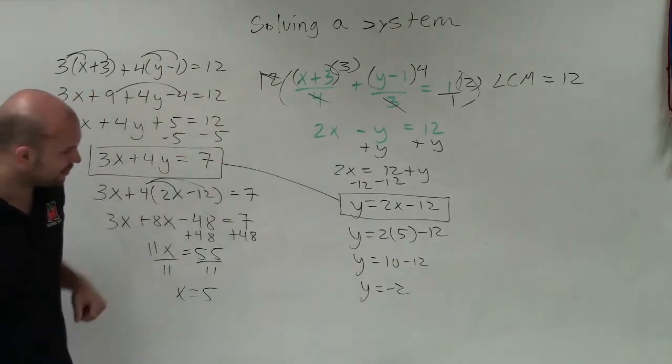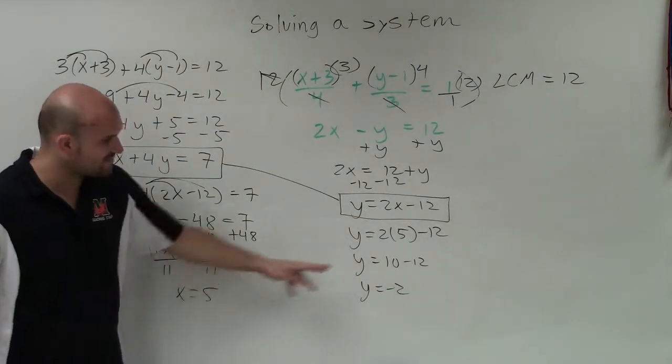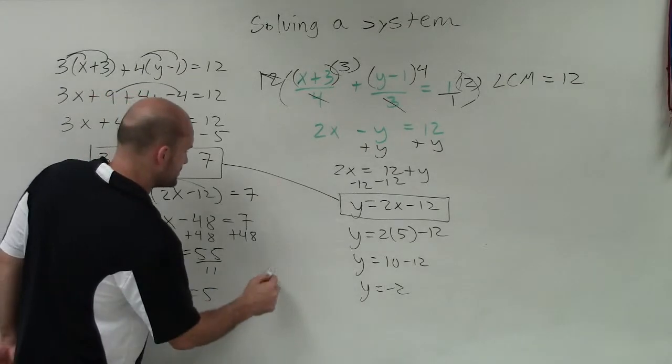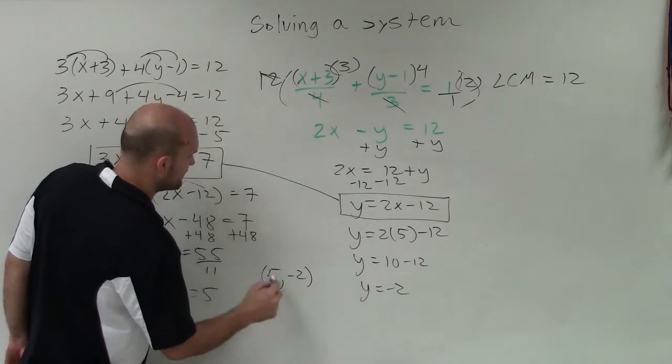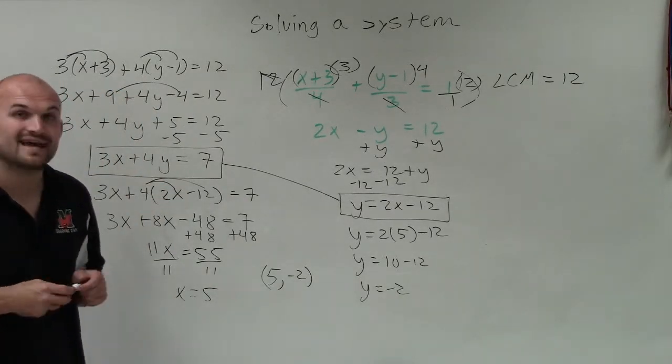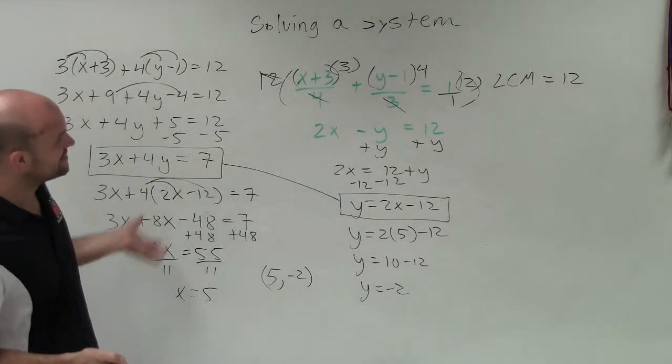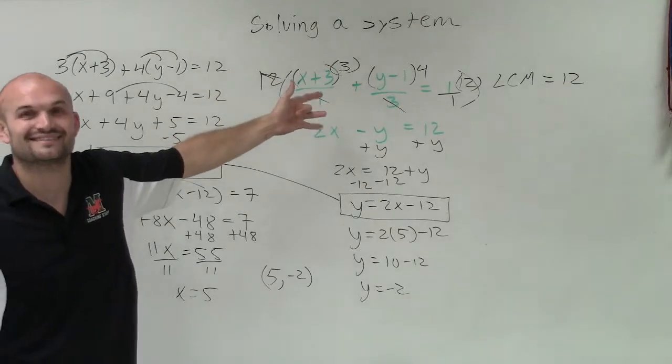Therefore, the solution to this system of equations is when x equals 5 and y equals negative 2. If they were going to be graphed, then we'd see the intersection point of that would be 5 comma negative 2. So there you go, ladies and gentlemen. That is how you solve a system of equations when it looks like something crazy like that. Thanks.